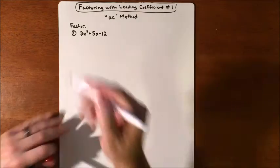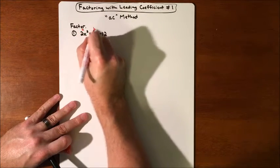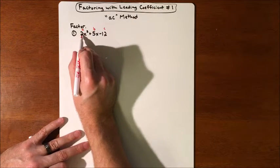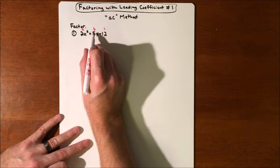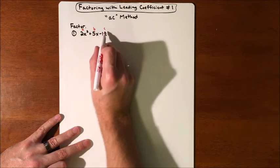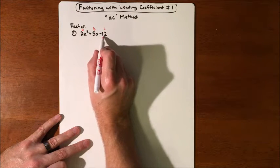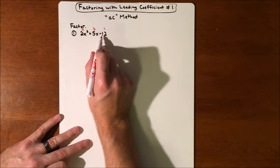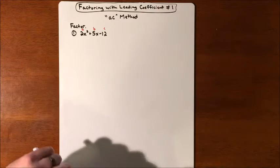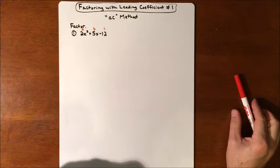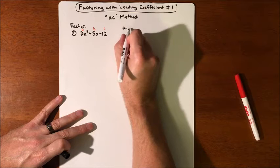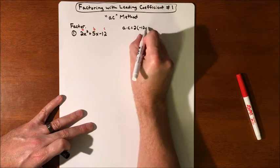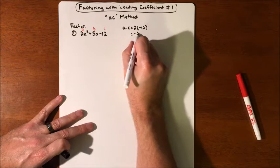The reason it's called the AC method is we have three terms, and the number in front of the x² is known as the a, the middle term — the 5 — is known as b, and c is the last term, which is negative 12. So we're not worried about the variables; we're just taking the coefficients in front of it. We call it the AC method because we are going to multiply a times c, so that's going to be 2 times negative 12, which is negative 24.